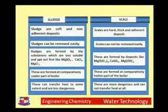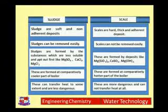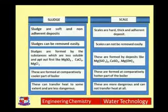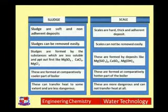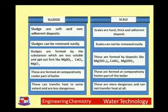Now let us talk about the basic differences between scale and sludge. Sludges are soft and non-adherent deposits — loose and slimy — that remain suspended in the boiler water. Scales, on the other hand, are hard, thick, and adherent deposits. Sludge can be removed easily by scraping with a brush or by blow-down operation, but scales cannot be removed easily. Some scales are so tough and thick that they may not even be removed by chisel and hammer.